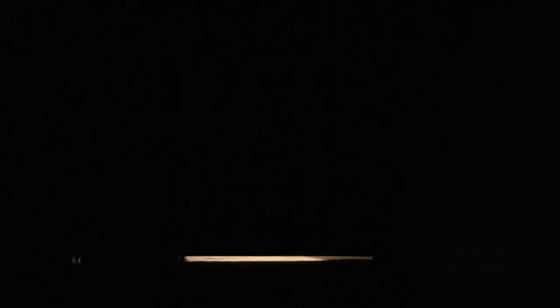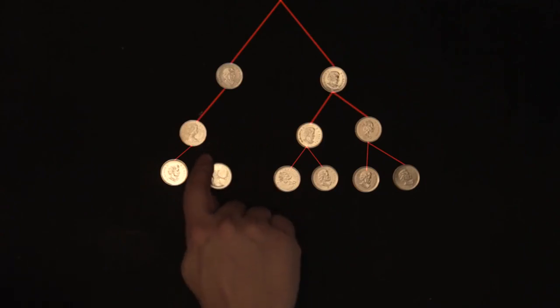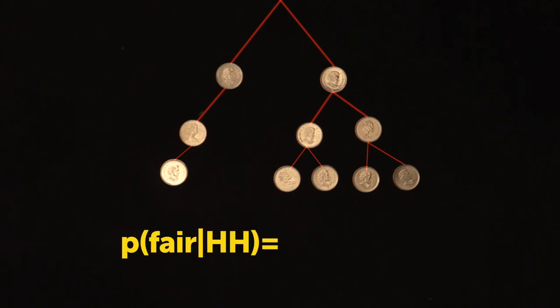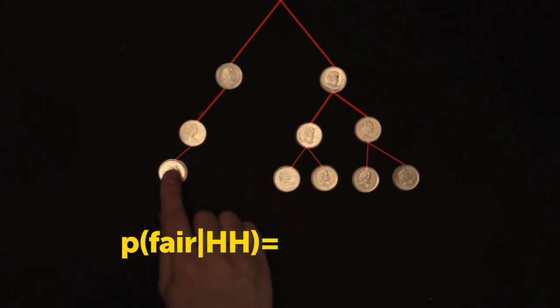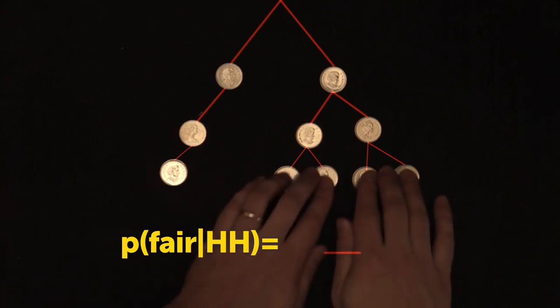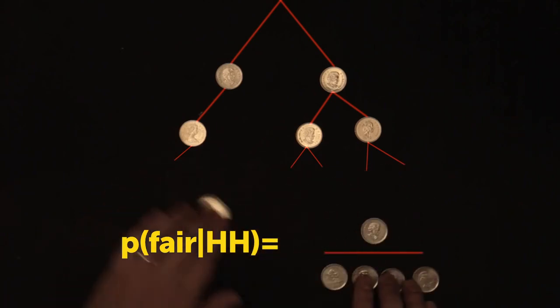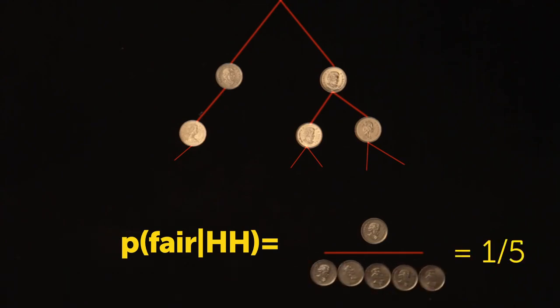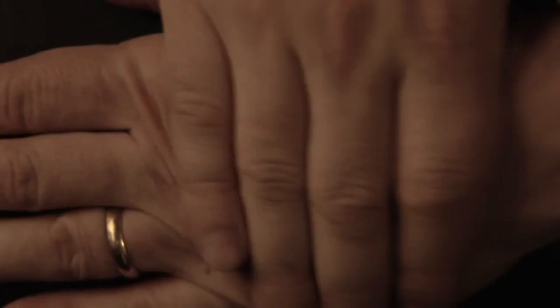After we hear the second heads, we cut any branches leading to tails. Therefore, the probability the coin is fair, after two heads in a row, is the one fair outcome leading to heads divided by all possible outcomes leading to heads, or one fifth.